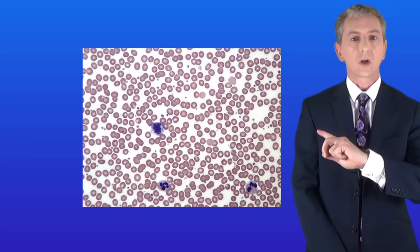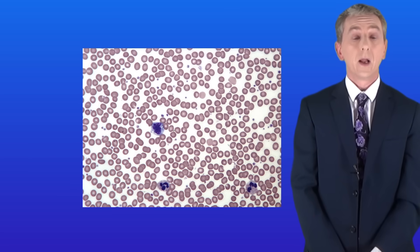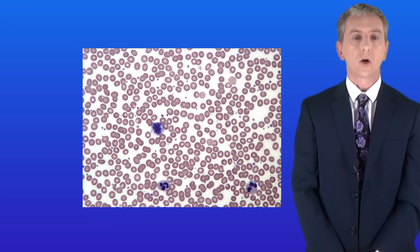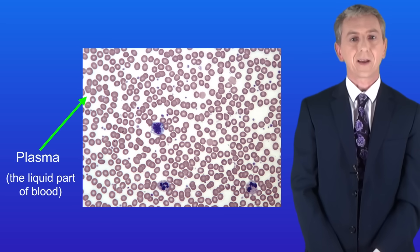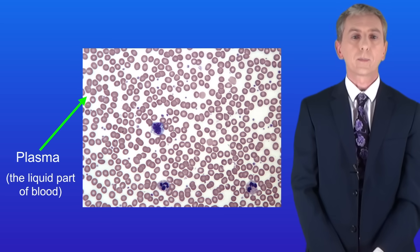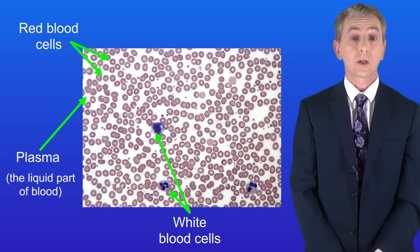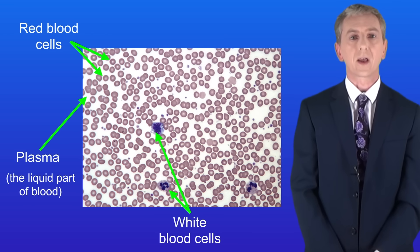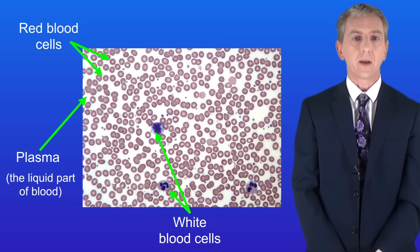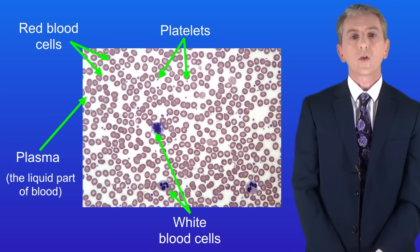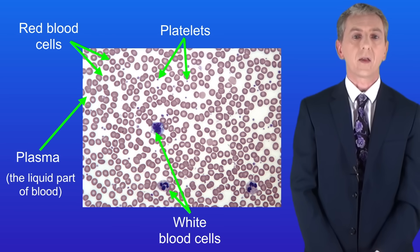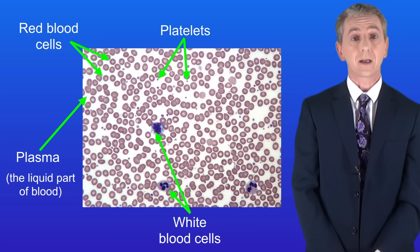This shows a picture of human blood under a microscope. There are four important parts that you need to know. First we've got blood plasma. Plasma is the liquid part of the blood. In the plasma we find two different types of blood cells: red blood cells and white blood cells. We also find tiny fragments of cells and these are called platelets.